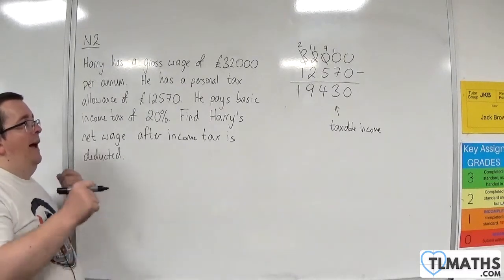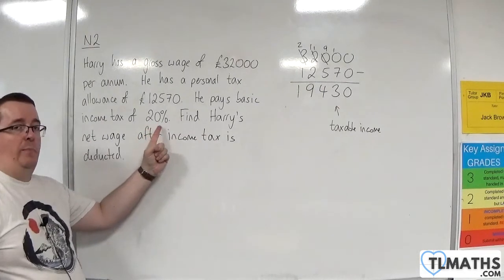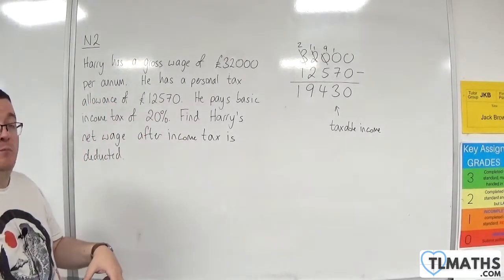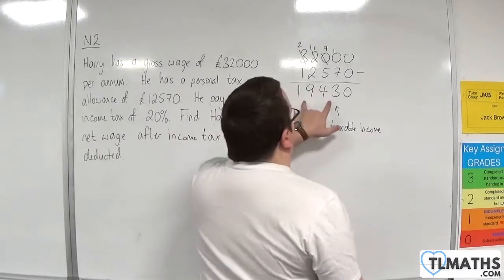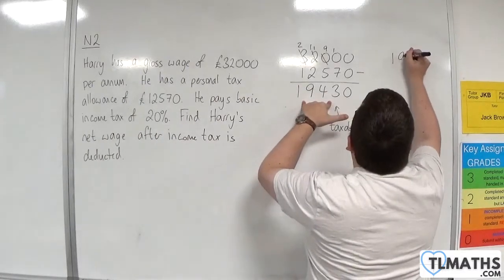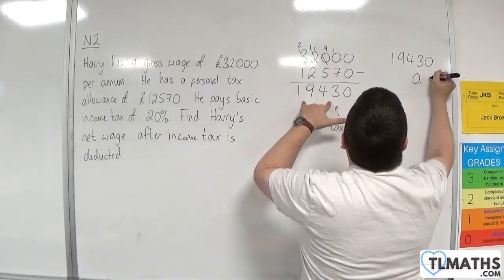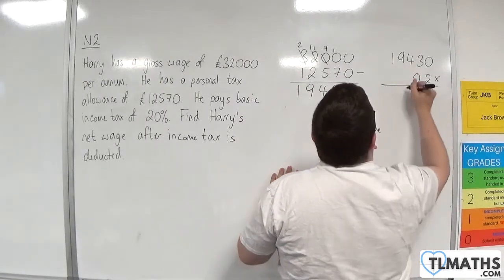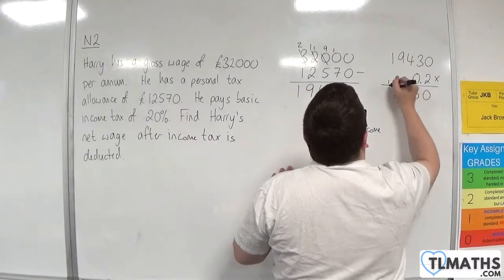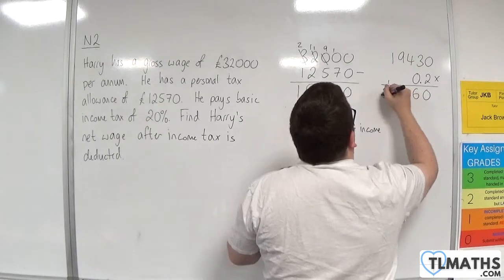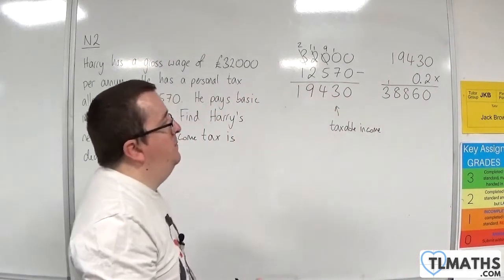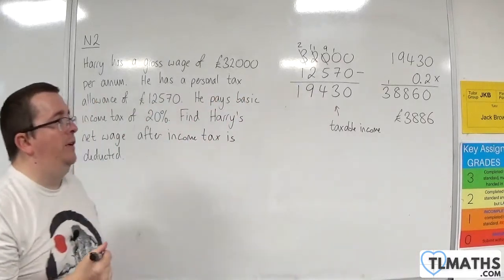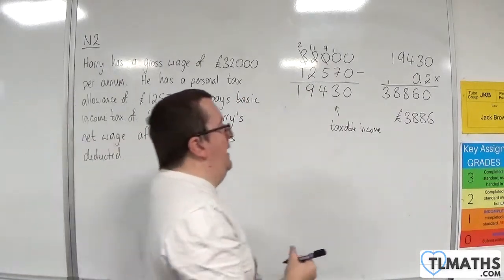Now we need to work out how much he's actually going to pay in income tax by working out 20% of that. There are a couple of different ways of doing it — you could work out 10%, then another 10% and add them together, or you could multiply by 0.2. So: 2 times 0 is 0, 2 times 3 is 6, 2 times 4 is 8, 2 times 9 is 18 — carry the 1, giving 3. We bring in one decimal point, giving £3,886 — that is how much Harry is going to pay in income tax.